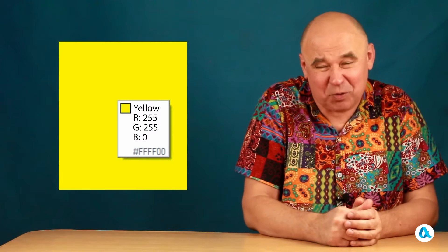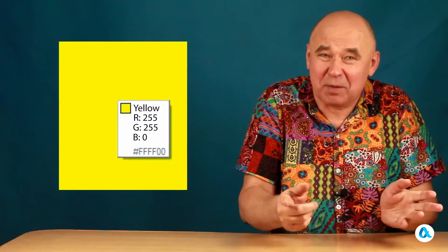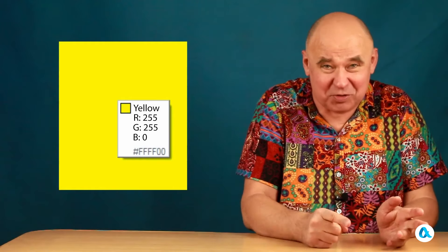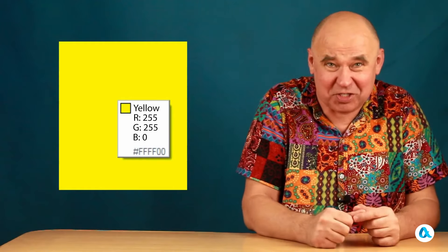But it is important to understand that the artificial yellow produced in this system is not the same as the spectral yellow. Instead, it is composed of a combination of red and green, which results in a similar but not identical shade of yellow.